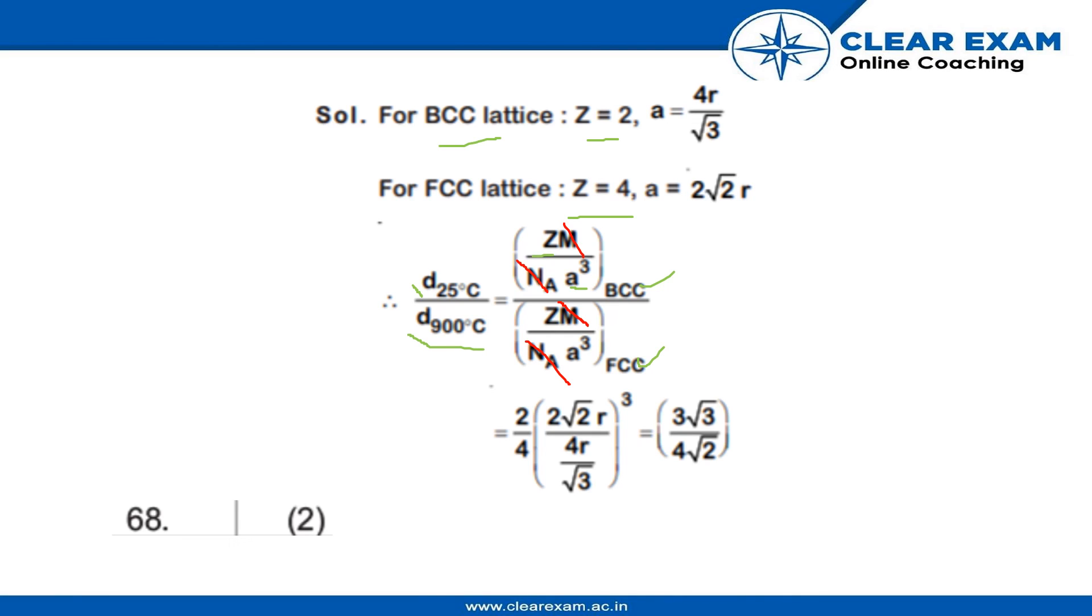we will get 2 root 2R upon 4R upon root 3 cubed into 2 by 4. So our answer is 3 root 3 by 4 root 2.